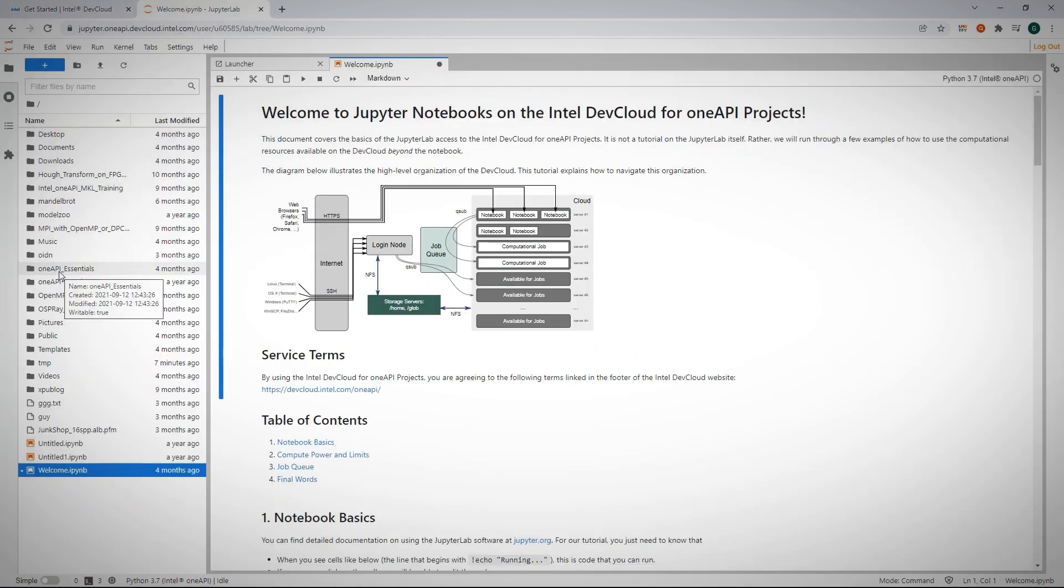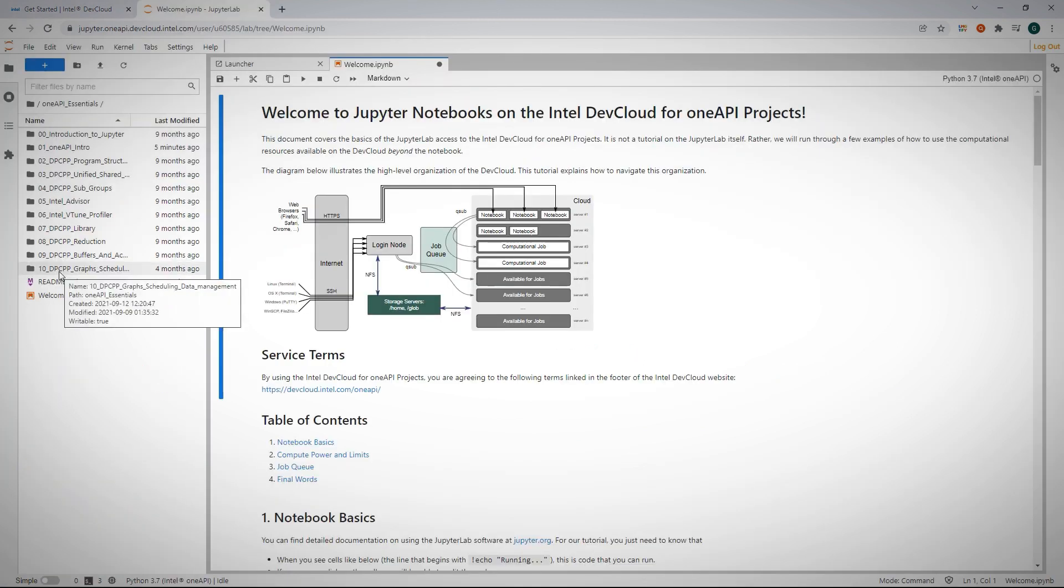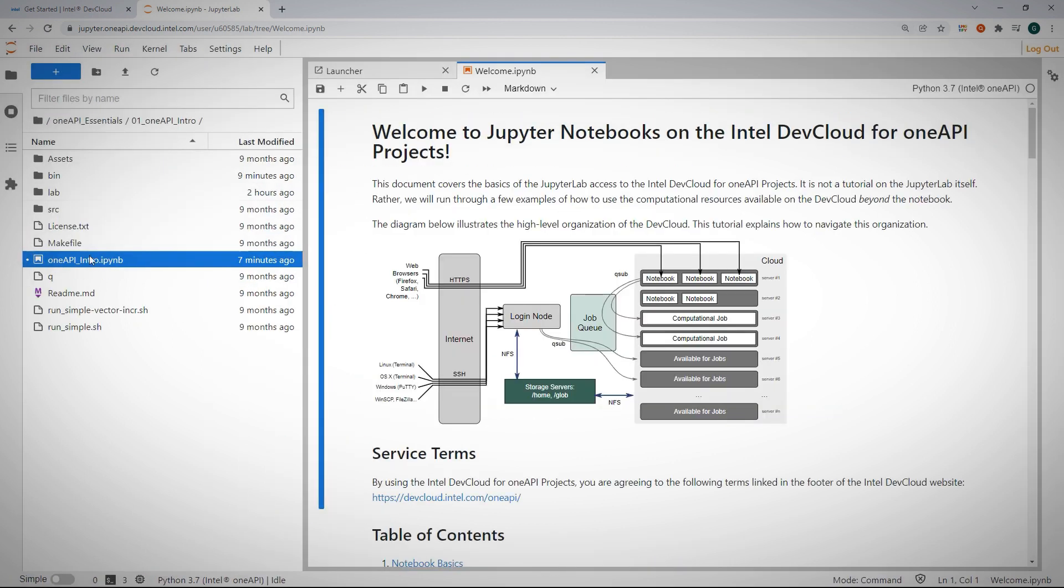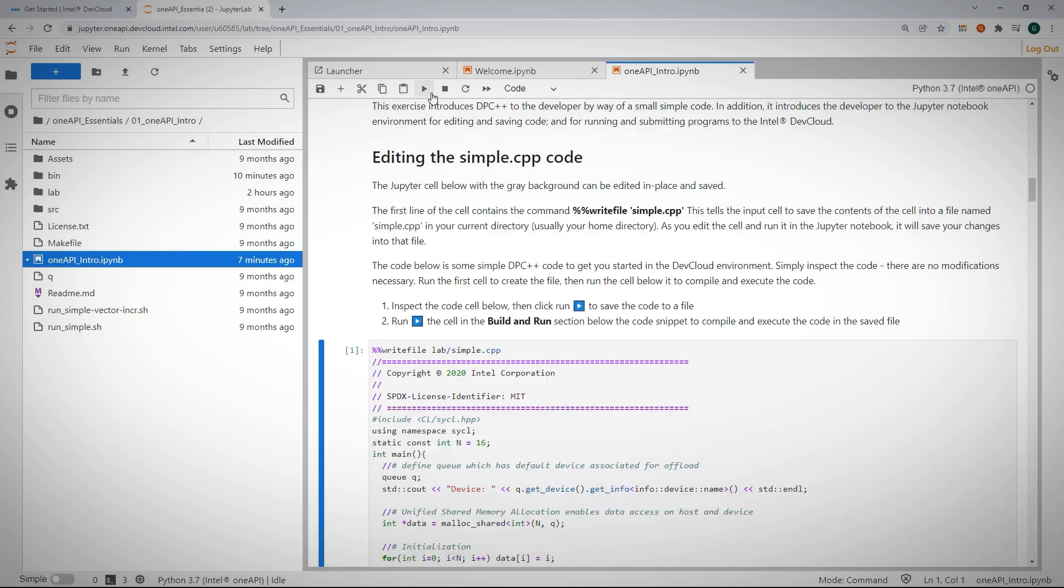Go to OneAPI essentials, to the first lab, OneAPI intro, launch the Jupyter notebook, and run cell after cell.